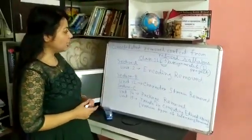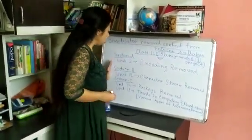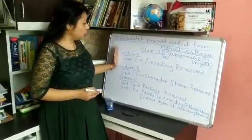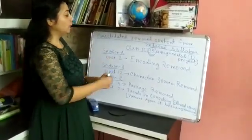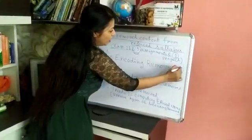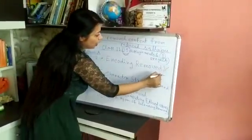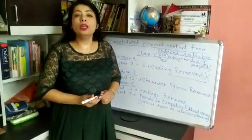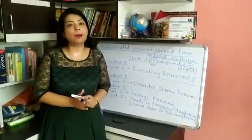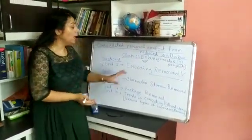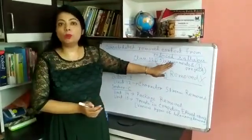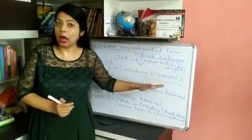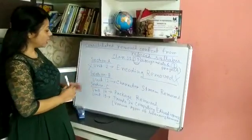Now come to your syllabus. There are 3 sections. Your syllabus is divided into 3 sections. In section A, unit 2 — encoding — has been totally removed. The encoding chapter you don't have now. The second chapter is not needed. Encoding is totally removed from your syllabus; you don't need to study encoding now.